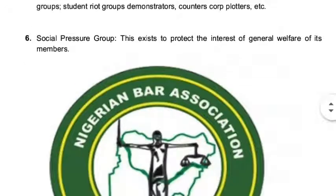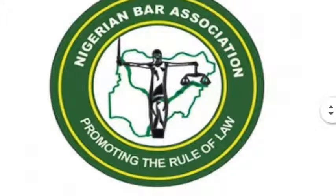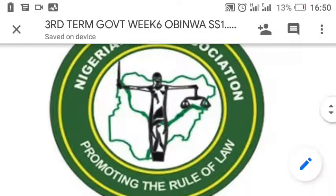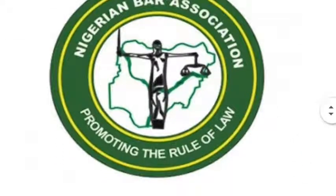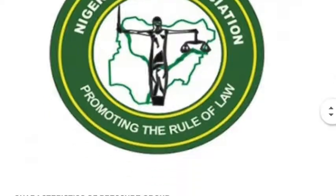The sixth type is the social pressure group. This exists to protect the interest and general welfare of each member. This is the logo of Nigerian Bar Association — a typical logo promoting the rule of law.